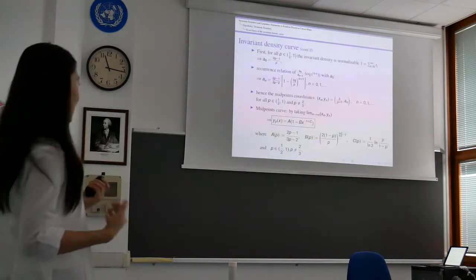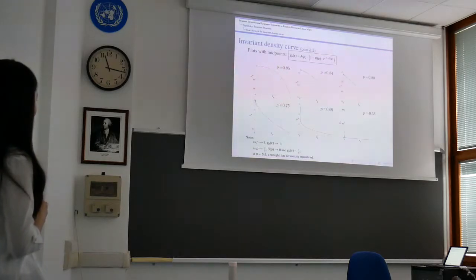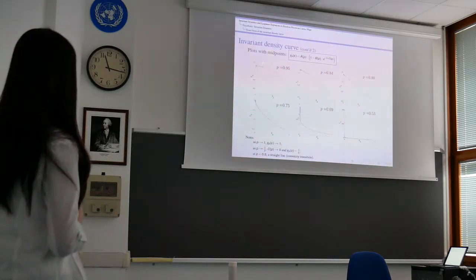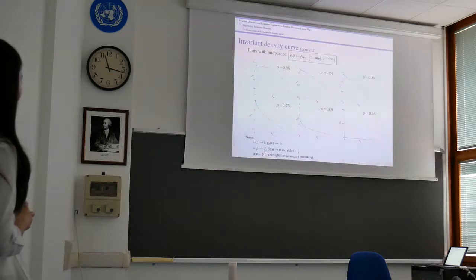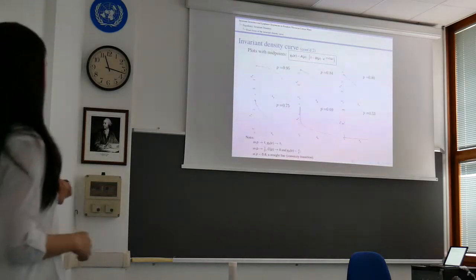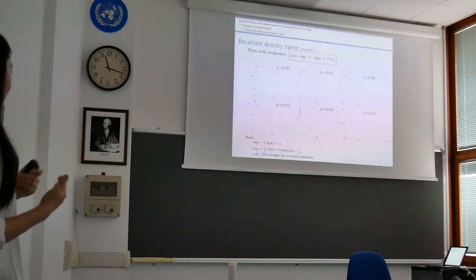Let's plot some curves for different values of p. I plotted the midpoints together with the invariant density curves for different values of p. When p approaches 1, the density approaches the uniform constant density. When p approaches 1/2, the exponent c_p goes to 0 so the invariant density curve behaves like 1/x. Moreover, when p is 0.8, the invariant density follows a straight line where the convexity changes.